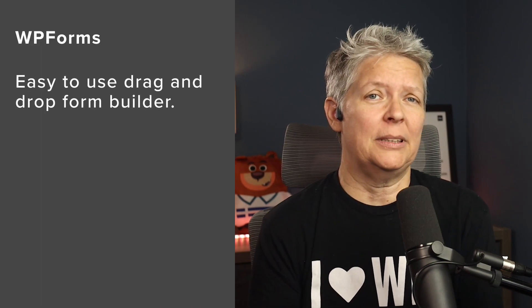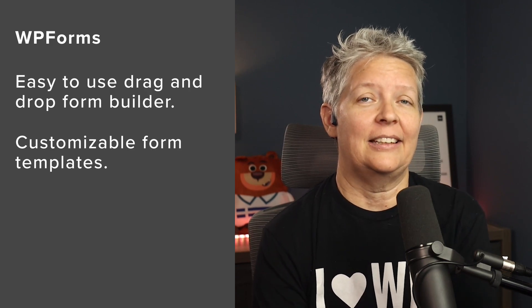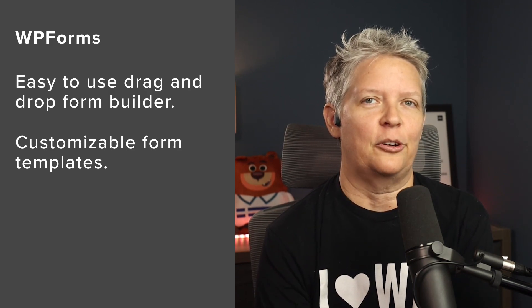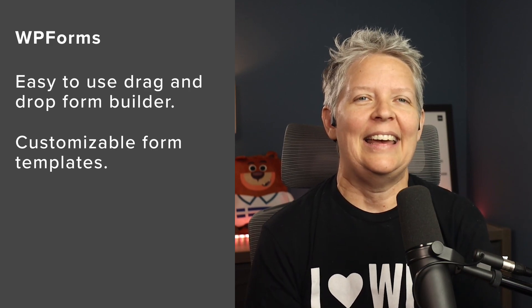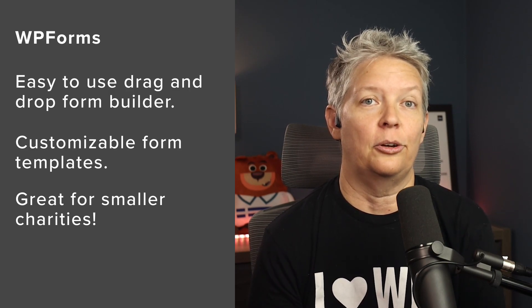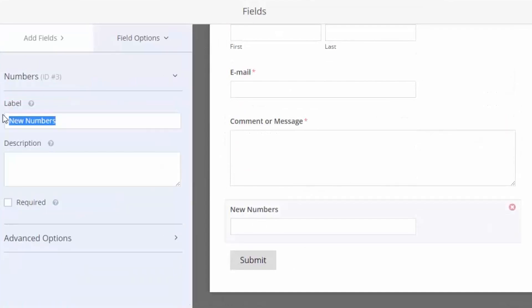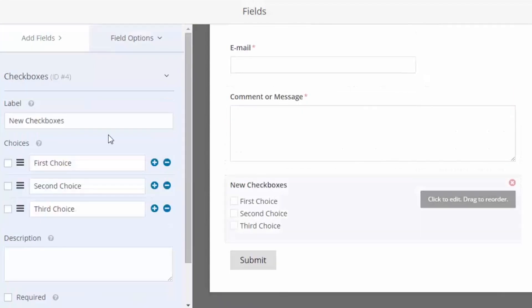Number two is WP Forms. This is the most beginner-friendly drag-and-drop form builder for your WordPress website. It comes with a built-in form template so you can quickly create your online donation form. Simply drag the template over, make the customizations you need for your nonprofit, and you're good to go. A lot of smaller charities and nonprofits don't need a full-fledged donation platform — they just want a simple, easy-to-customize donation form where they can accept one-off payments or recurring donations, and WP Forms lets you do that.